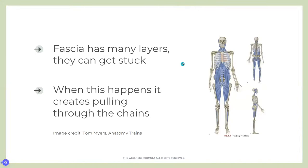Until about 50 years ago, fascia was thought to be irrelevant, but we're just beginning to understand it — this is really groundbreaking anatomy. Fascia has many layers that should be able to glide along each other, well lubricated and with good movement. But sometimes those layers get stuck — dried out perhaps through overuse or poor posture. When fascia gets stuck it actually creates pulling through big chains of muscles and structures.